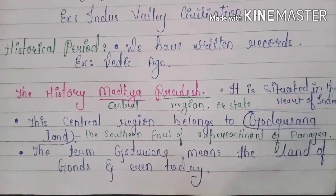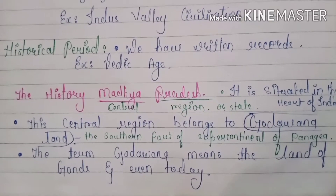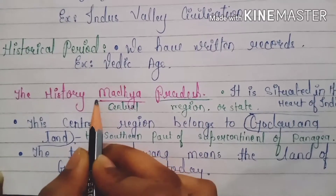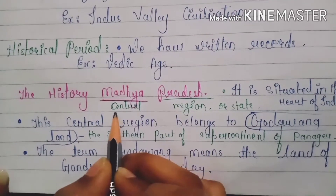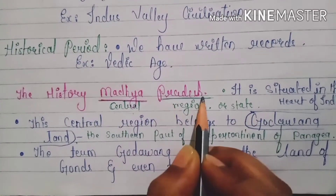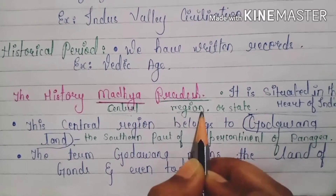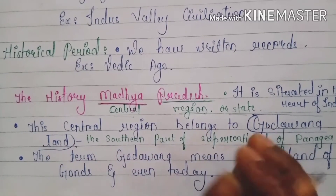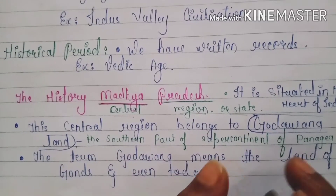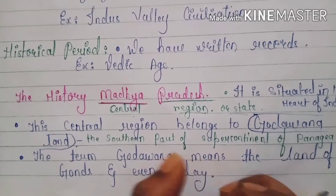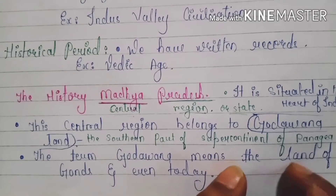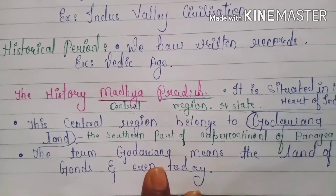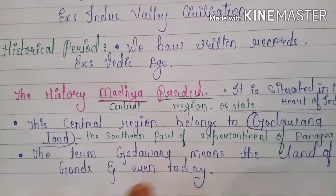History of Madhya Pradesh — it is situated in the heart of India. Madhya means central. Madhya Pradesh refers to the central region or state. The central region belongs to the Gondwana land.